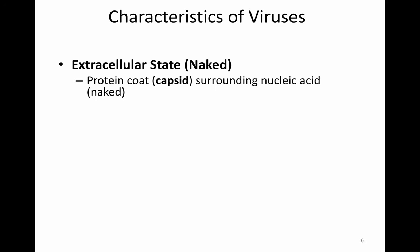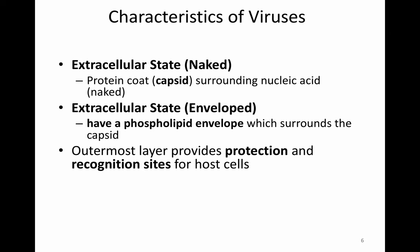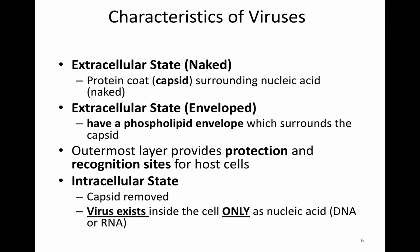Looking at the extracellular state of a naked virus: they have a protein coat or capsid which surrounds a nucleic acid. The capsid is made up of individual subunits called capsomeres. The extracellular state of an enveloped virus has a phospholipid envelope which surrounds the capsid. The envelope also has protein spikes. The outermost layer provides protection and recognition sites for host cells. Naked viruses are more resistant to chemical disinfectants than enveloped viruses.